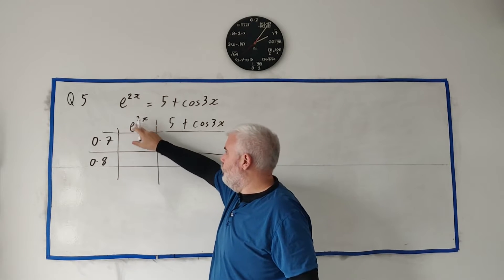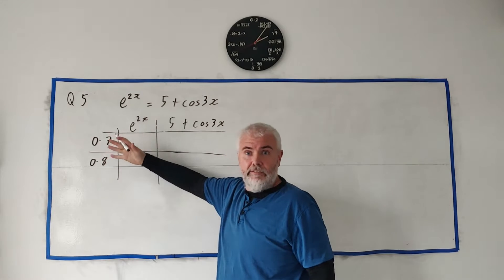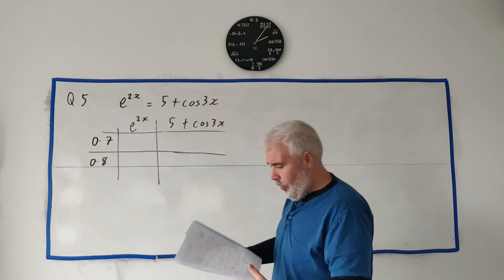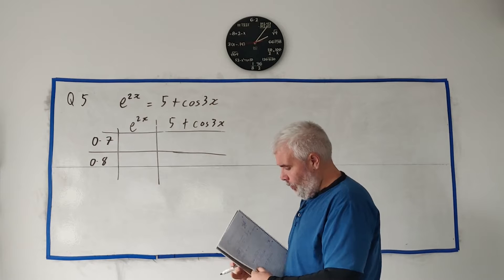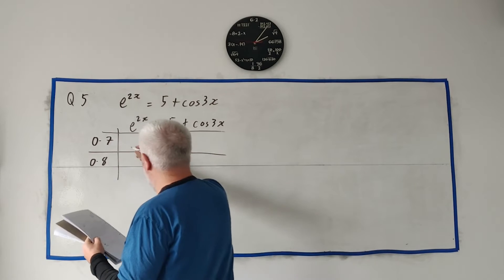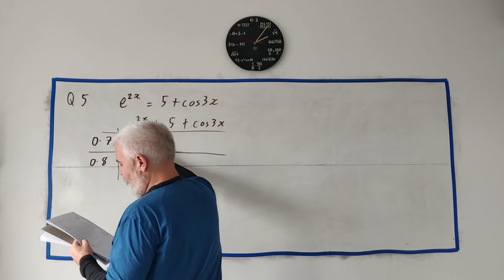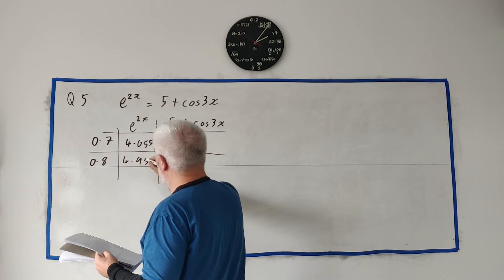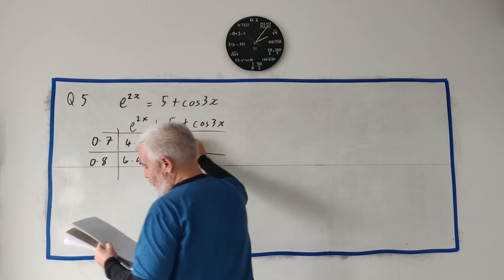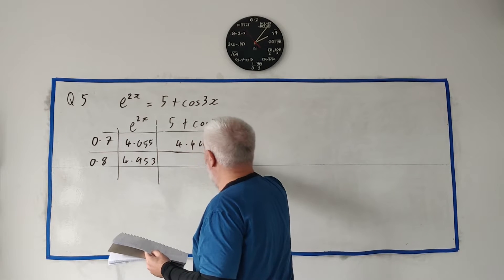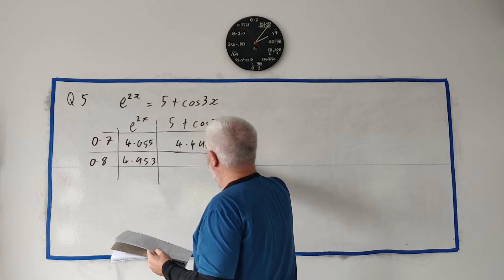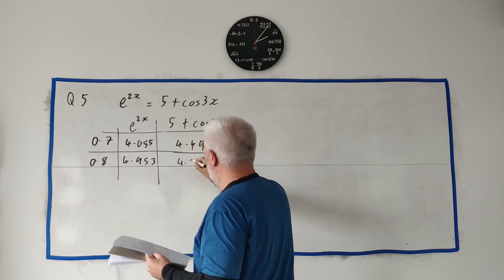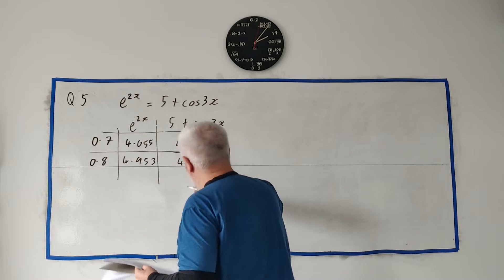Simply put these into a calculator. e to the power of 2 times 0.7, or e to the power of 1.4. Putting all these into the calculator, I get approximately 4.055, 4.953, 4.495, and 4.263.